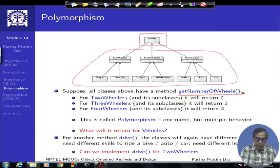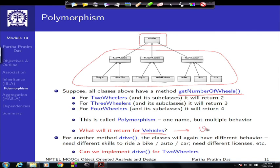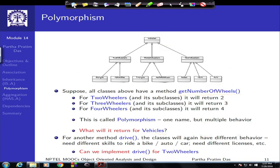If vehicle were not abstract, I could have a concrete object V1 of type vehicle, and send the message get number of wheels to it. But we know that message cannot be executed because there is no algorithm for it. This is the fundamental notion of abstract classes and how polymorphism and abstract classes relate to each other.